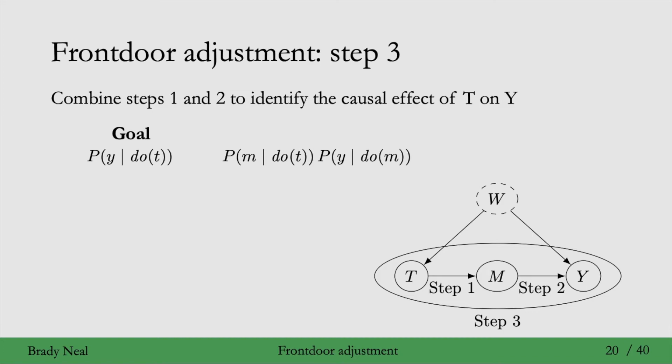And then because this first one here, P of M given do T, is a distribution over M, we have to sum over all the values that M can take on. So we have some value of T here that we're interested in measuring the causal effect of. And what we do is we look at the effect of T on M. So there's some specific value of M here that then we look at the effect of that M on Y. And we're chaining those two together.